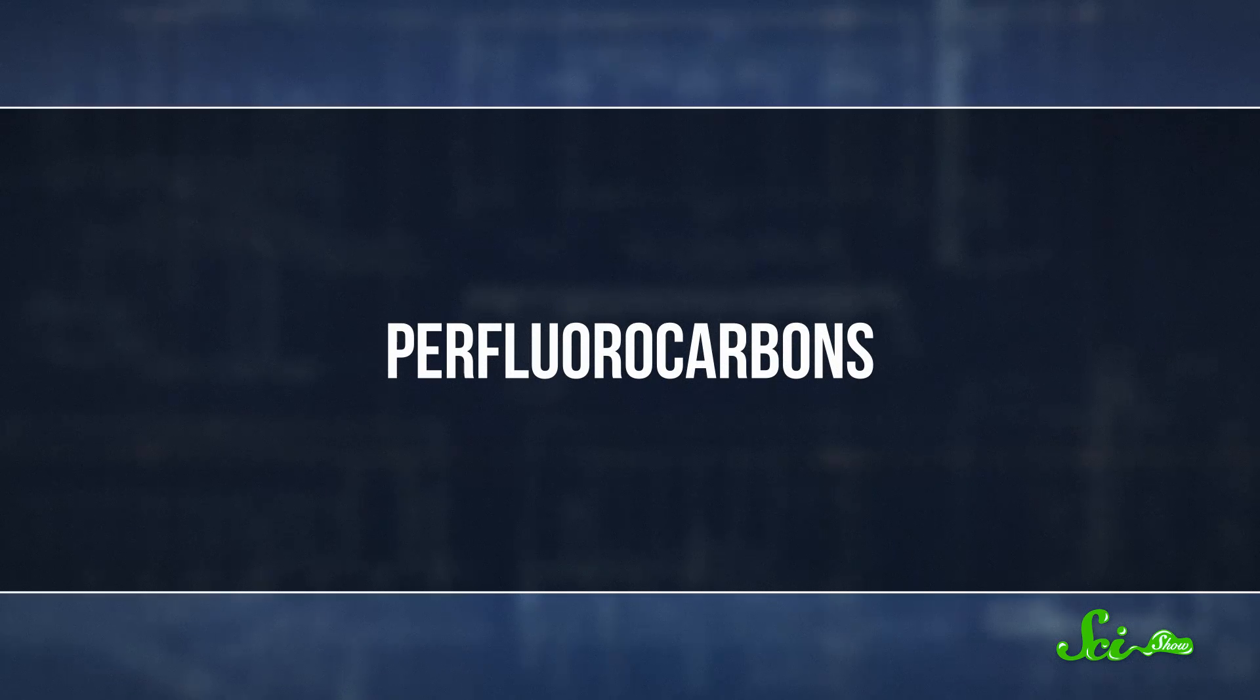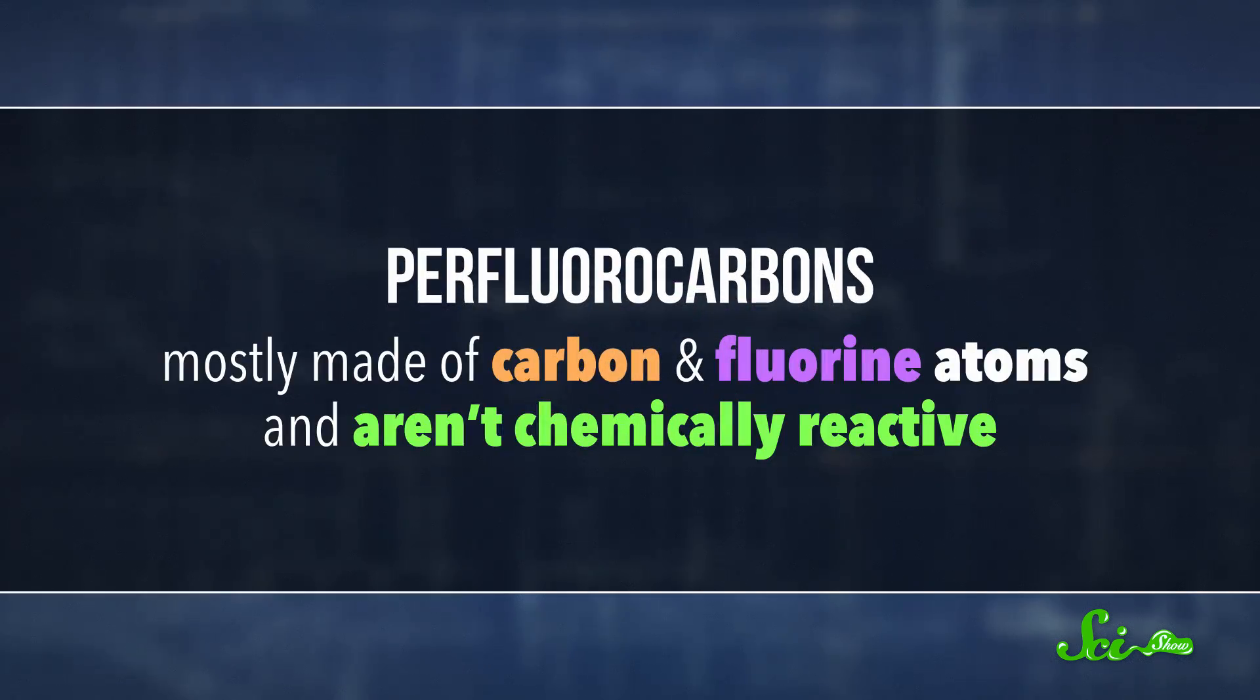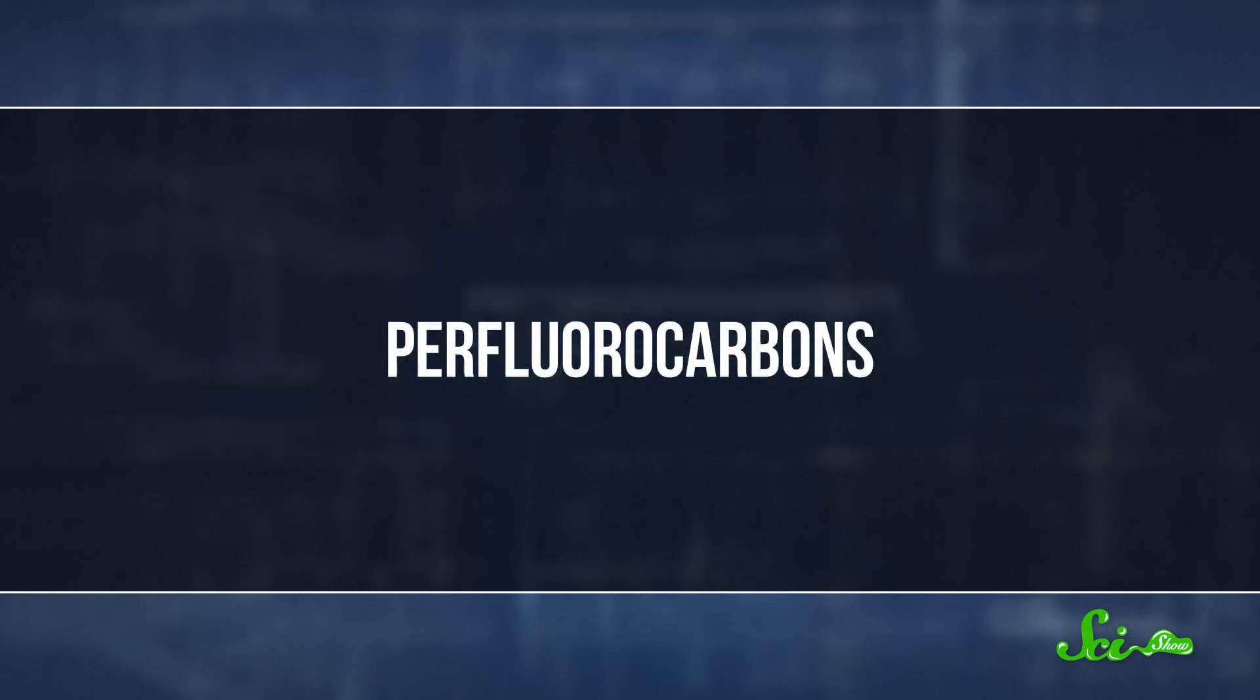In recent decades, there have been three main approaches to making blood substitutes that meet at least some of these criteria. One involves a class of synthetic chemicals called perfluorocarbons, which are mostly made of carbon and fluorine atoms and aren't chemically reactive. Perfluorocarbons can bind with gases like oxygen and carbon dioxide to carry them around like red blood cells do.